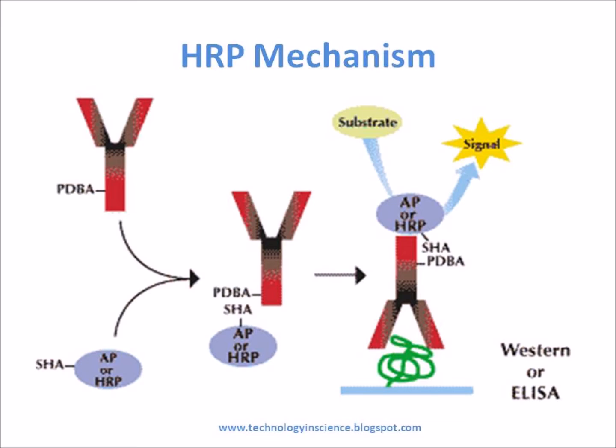When diaminobenzidine is used as a substrate, the oxidized product polymerizes to form a brown precipitate in water and ethanol. In the presence of cobalt or nickel, the product will be blue-black.